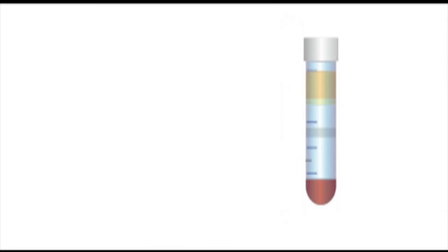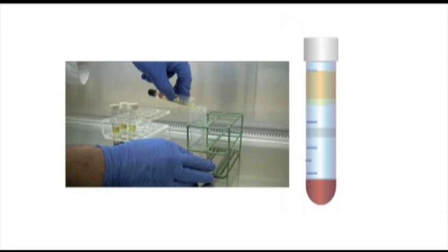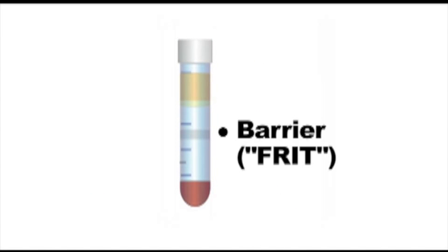This dense band of mononuclear cells may be collected by pouring off the contents of the upper chamber or by means of a pipette. Erythrocyte contamination is avoided due to the barrier between the chambers.